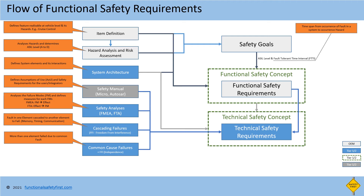Then, the TSR needs to consider safety mechanisms to address common cause failures. A common cause failure is when a fault in one element causes more than one element to fail — in other words, more than one element fails due to a common cause. For example, a power supply or crystal oscillator are common causes of failure in hardware.